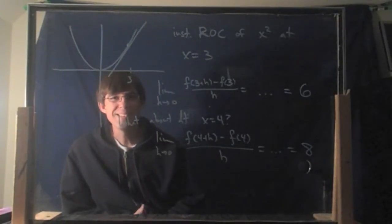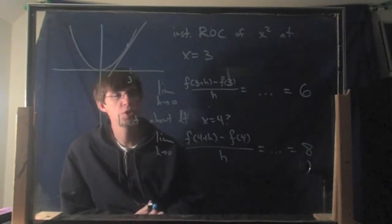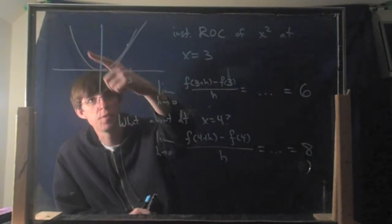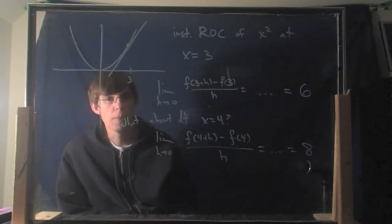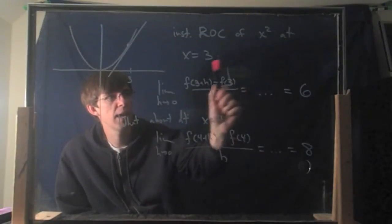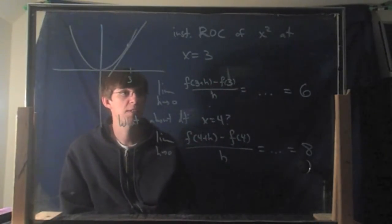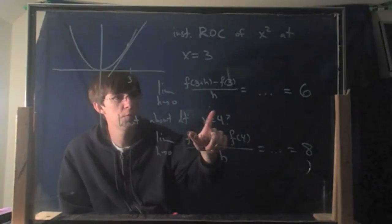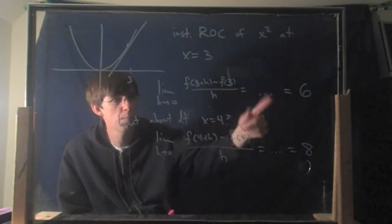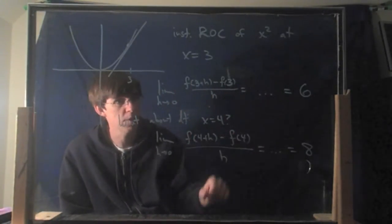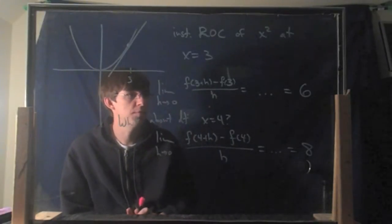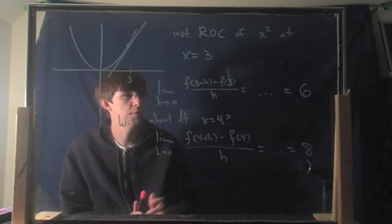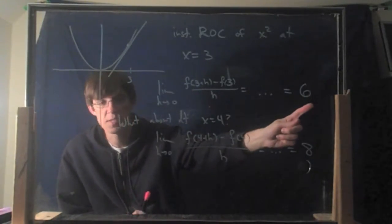Last time we were talking about the instantaneous rate of change of a function. We did this example here — the function f(x) = x². The instantaneous rate of change at the point x = 3, using the formula, you plug that point in and do a whole bunch of steps. We got 6 as the answer.